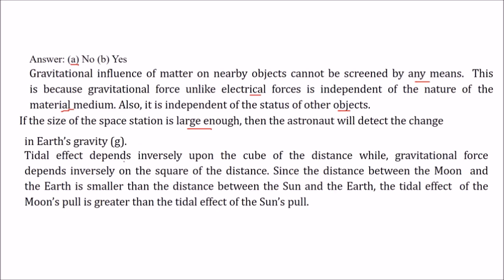Jab sun aur moon ke baare mein baat karenge earth se respective toh jo tidal effect hai woh inversely distance ke cube pe depend karta hai — 1 by r cube. Jo gravitational force hai woh depend karta hai inversely 1 by r square pe. Aur chuki jo doori hai moon aur earth ke beech mein woh kam hai jo doori hai sun aur earth ke beech mein, toh jo tidal effect hai moon ke pull ka woh zyada hai. Is relationship se aap samajh rahe honge: jitna sun pull de raha hai usse zyada moon ka pull hai — doori kam hai.